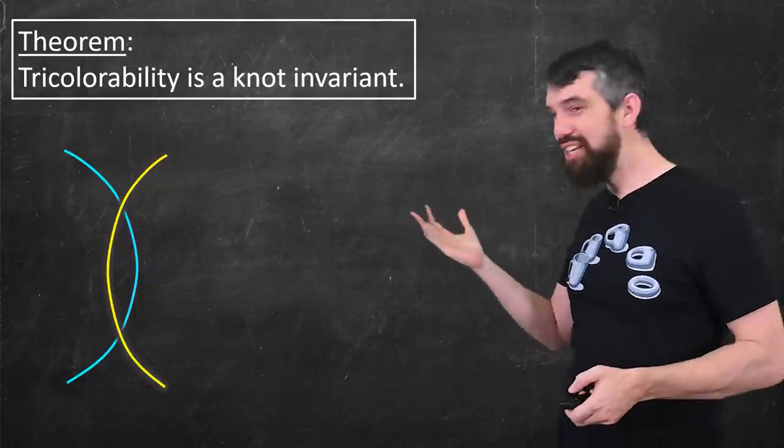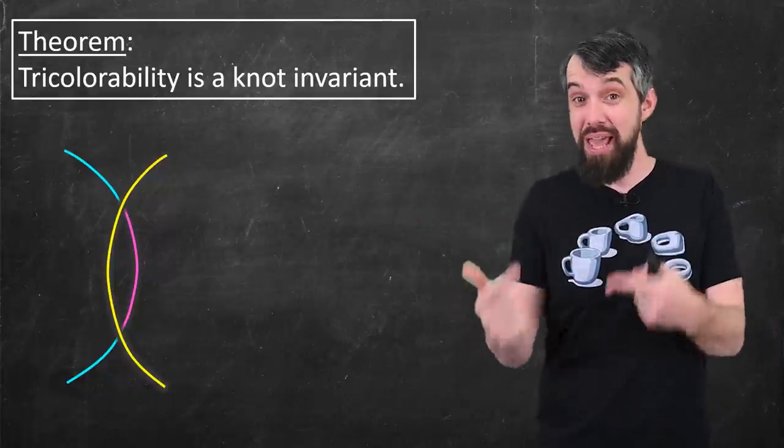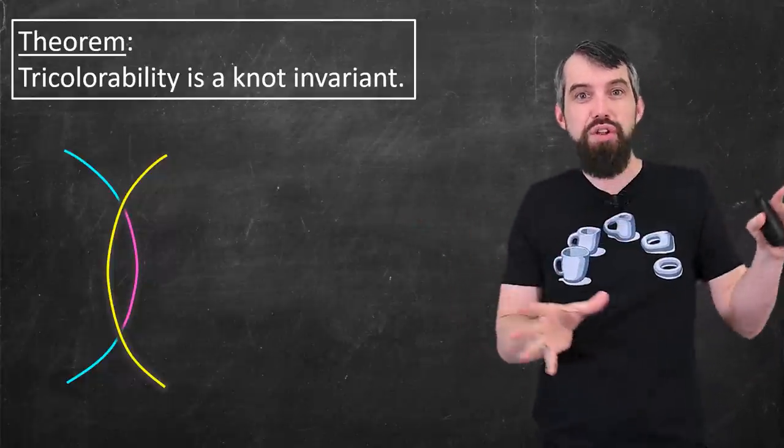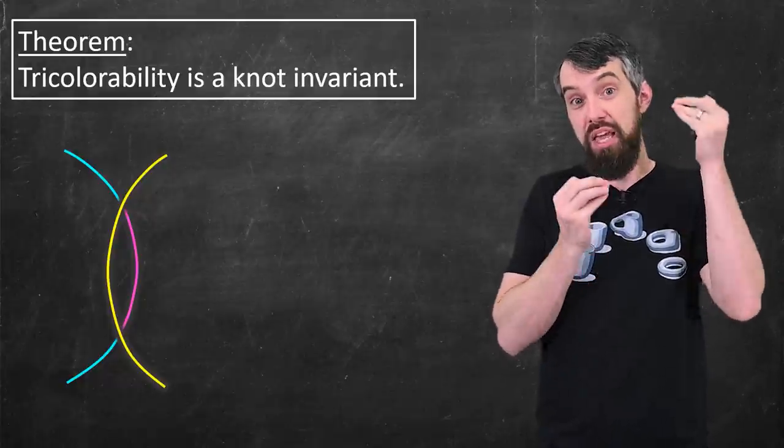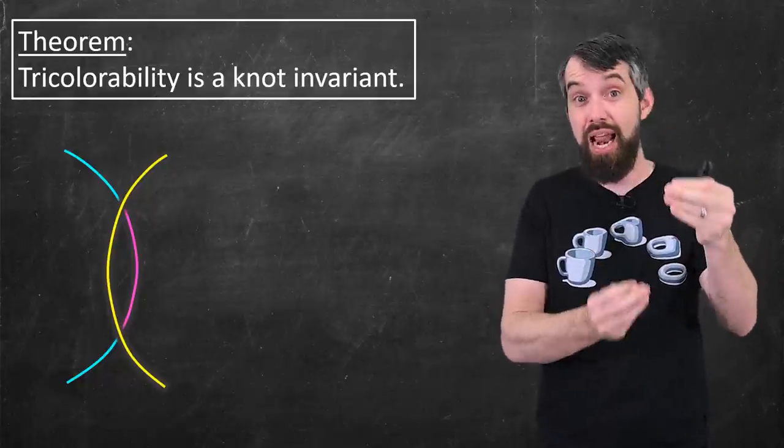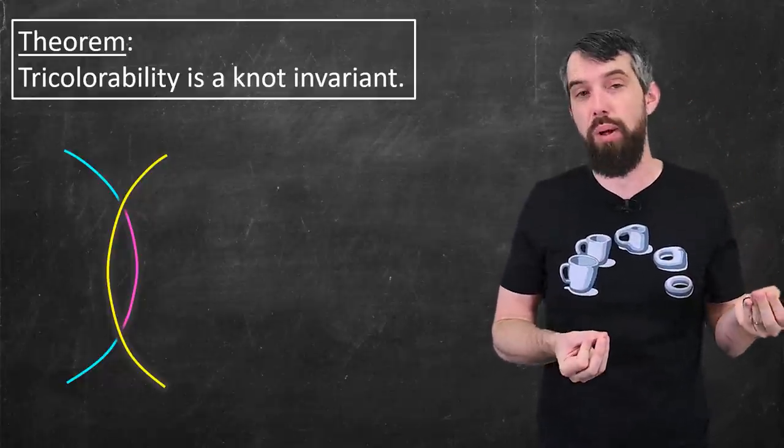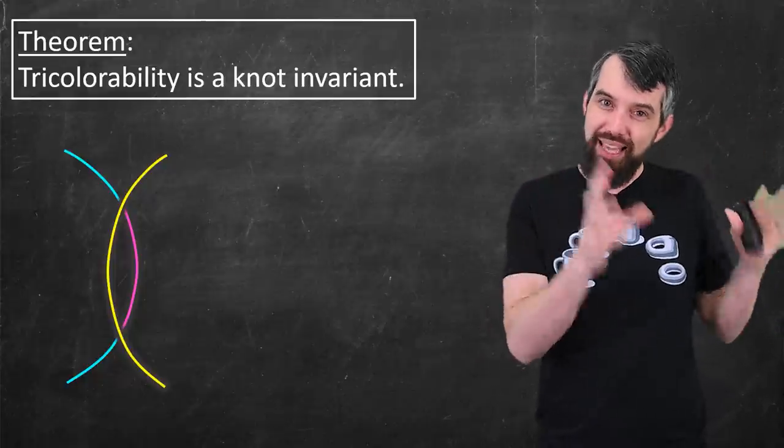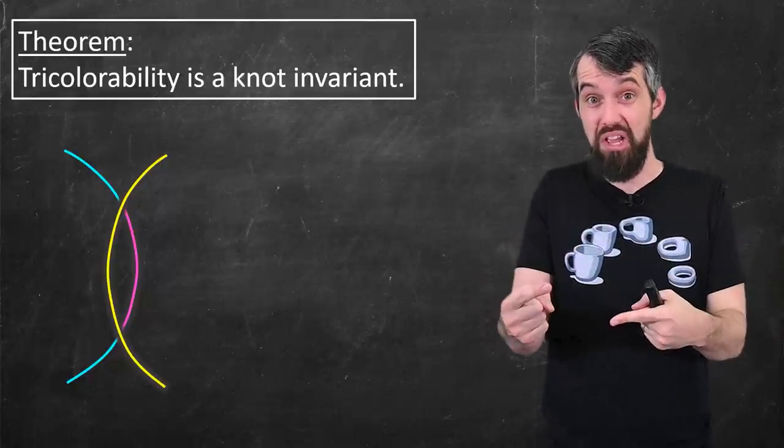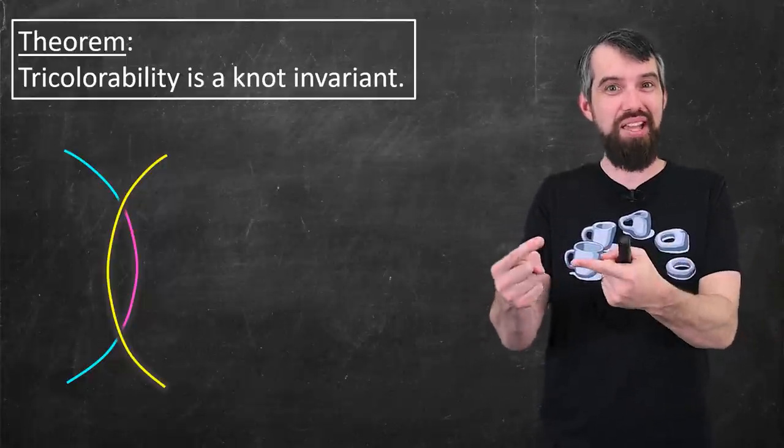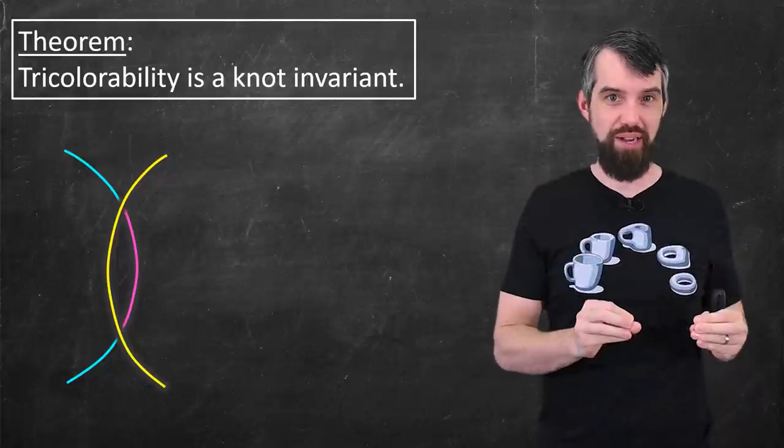But if I take this region in the middle and I paint it pink, then the rest of the knot that I haven't drawn here is all the same. But this obeys tricolorability, the two different crossings that I have now are tricolorable. So the point is, if I begin with the knot that is tricolorable, and I do a Reidemeister move to it, it also remains tricolorable.